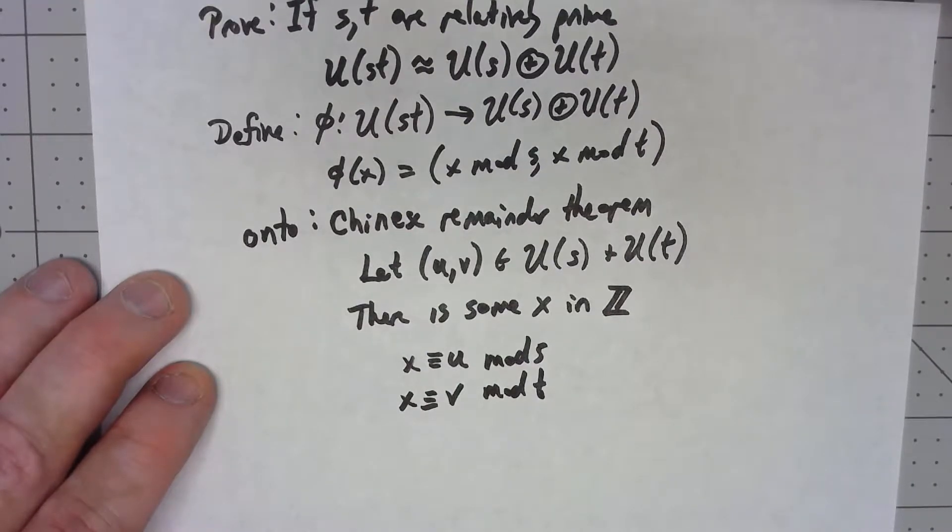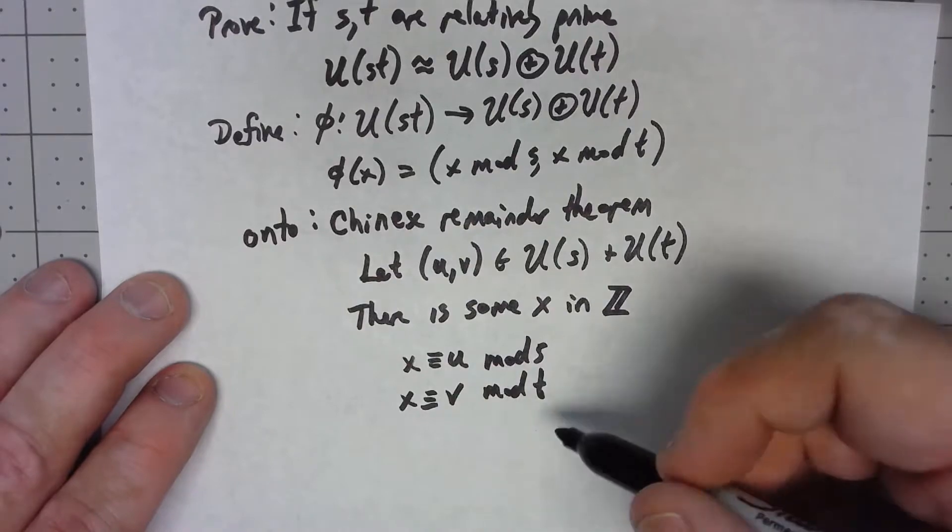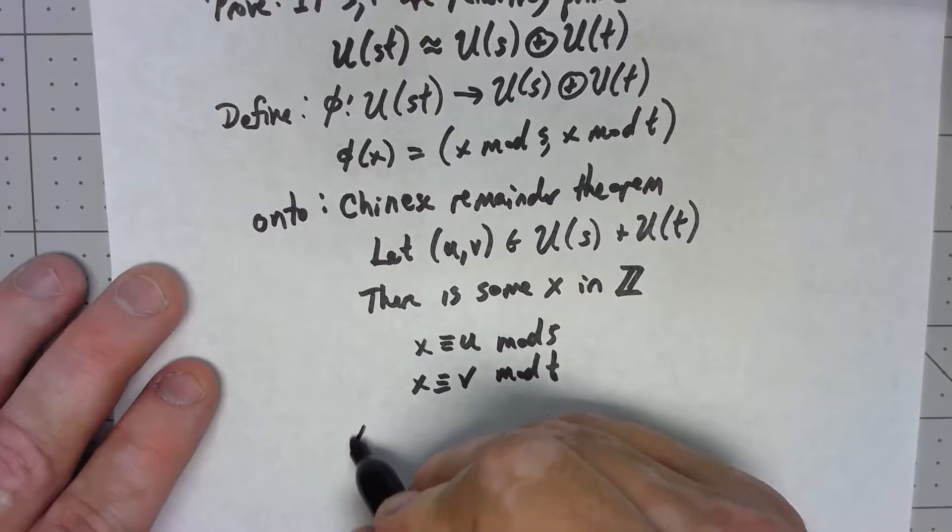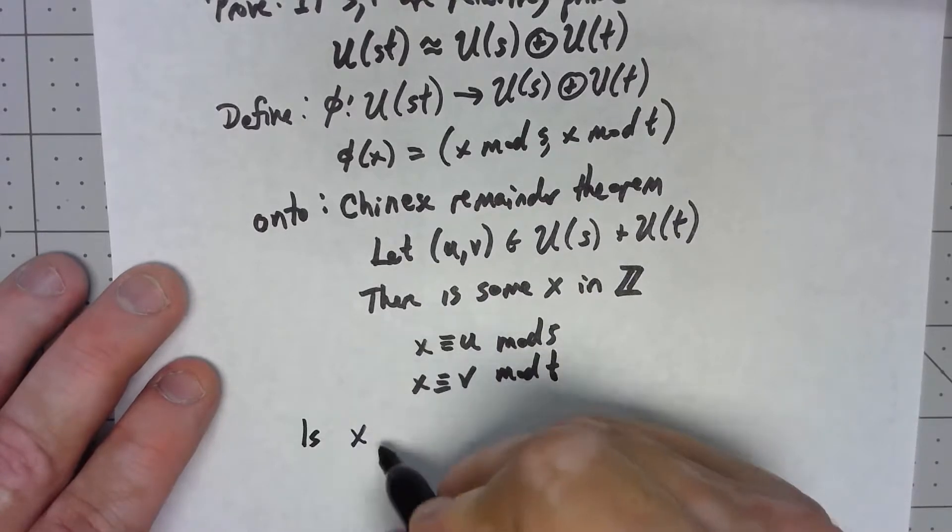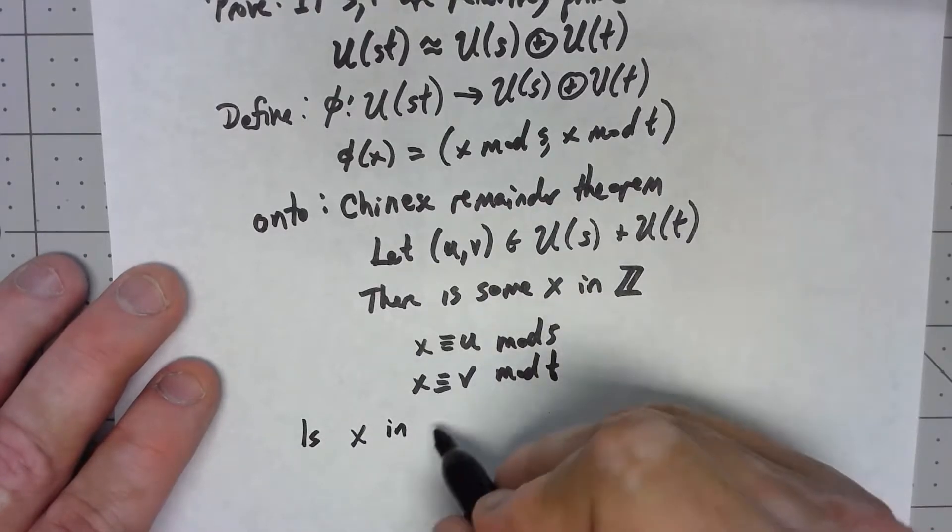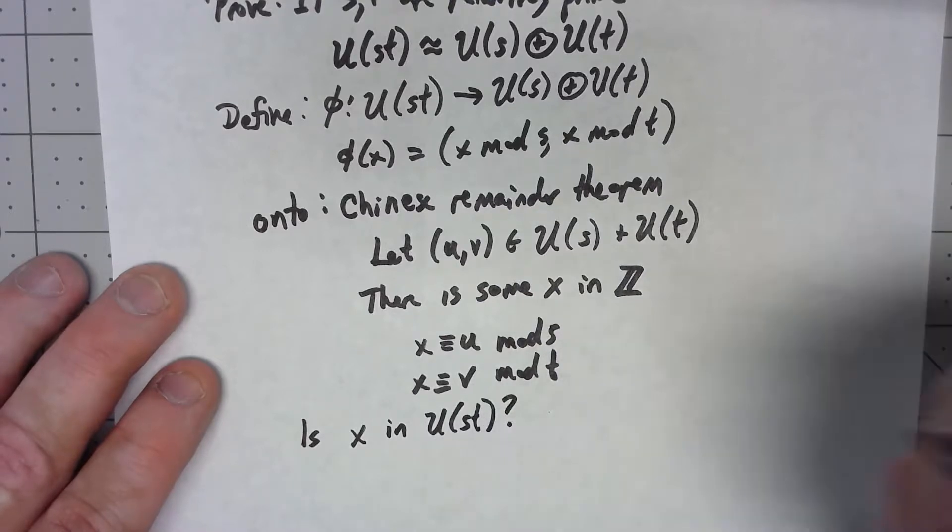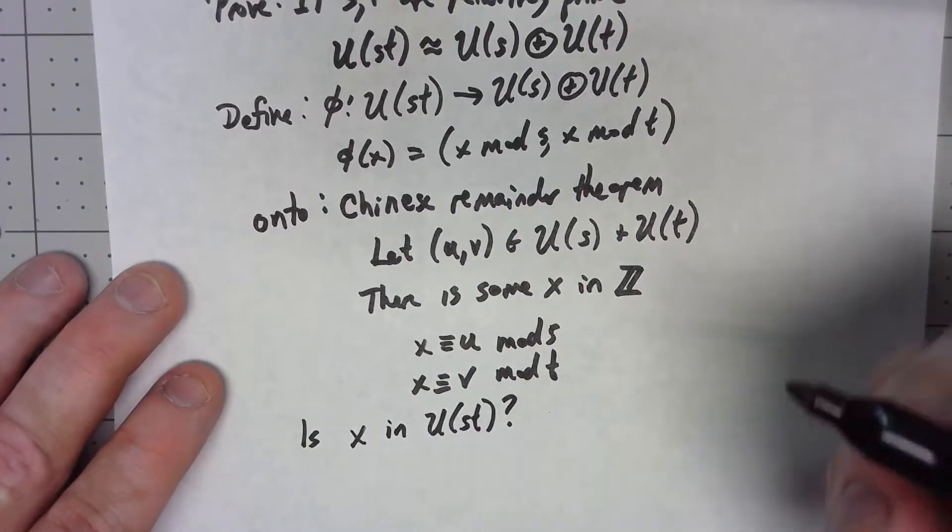So there's two things to show about x. So first of all, is x in U(st)?